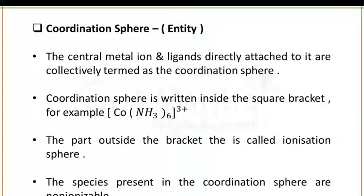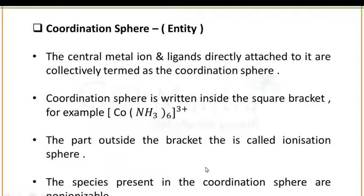Next is the coordination sphere. The central metal ion and ligands directly attached to it are collectively termed as the coordination sphere. The coordination sphere is always written in a square bracket. As you can see here, these square brackets show the coordination sphere. The part outside the bracket is called the ionization sphere, and the species and ions present inside the square bracket are non-ionizable.